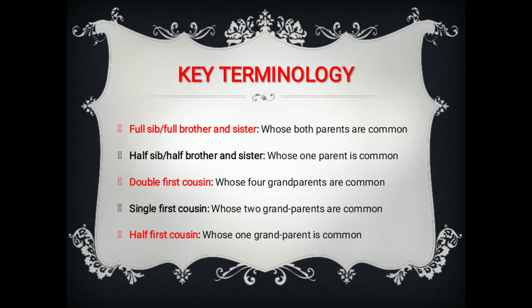Key terminologies related to inbreeding include: full sib, or full brother and sister mating, means both parents — father and mother — are common. Half sib, or half brother and sister, refers to individuals whose one parent is common — it may be either the father or the mother. Double first cousin refers to individuals whose four grandparents are common but fathers may be different.